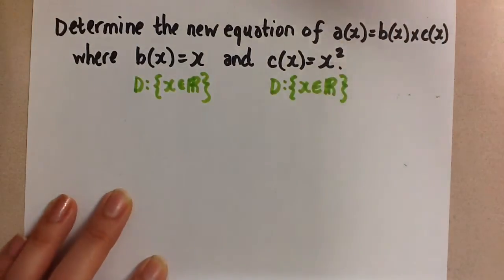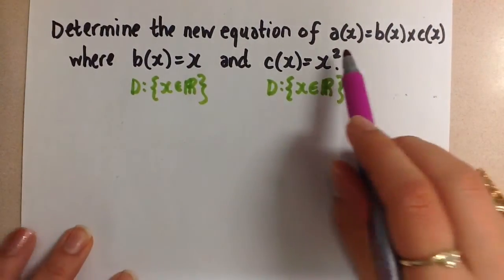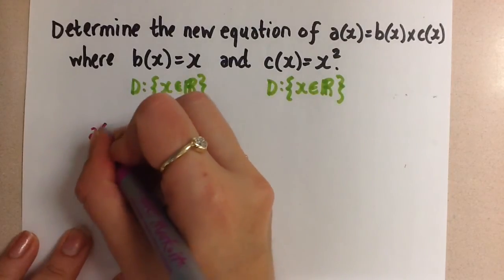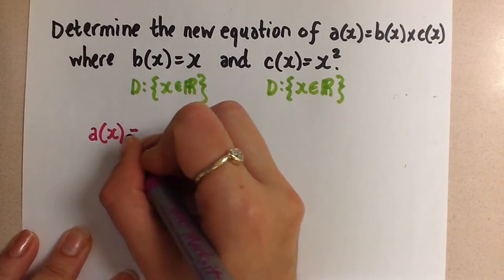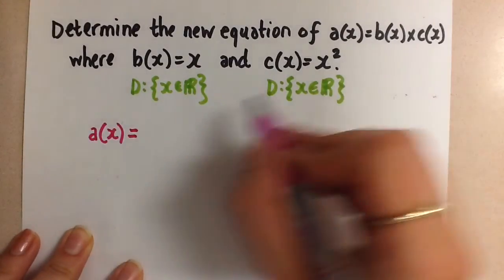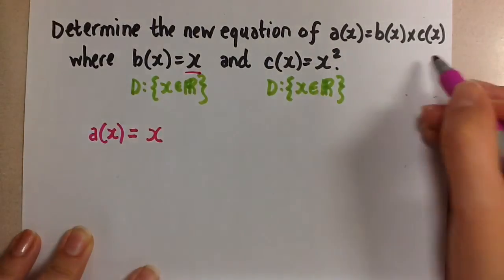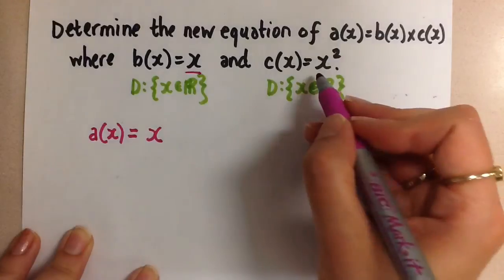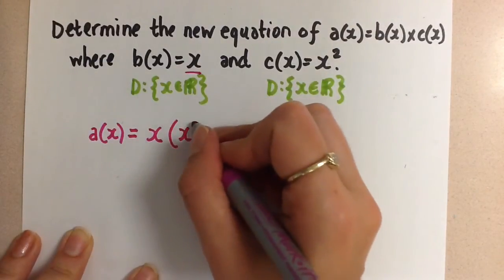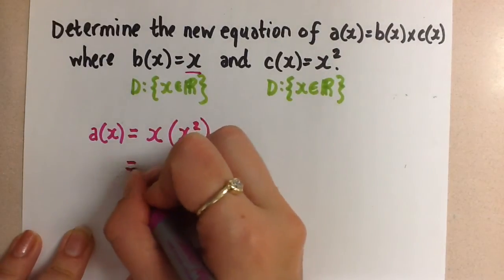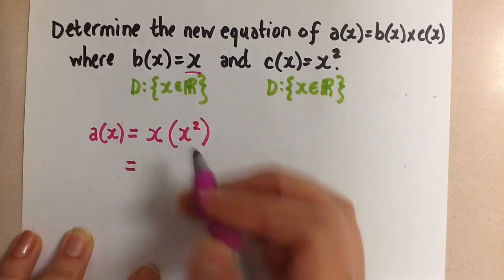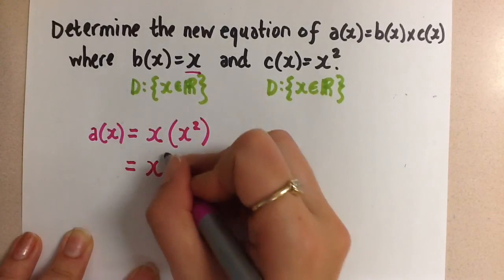So we're going to go ahead and do exactly as the equation tells us to do. Our new function, a(x), is going to be b(x), which is x, times c(x), which is x². Now we can just simplify. x times x² is x³.